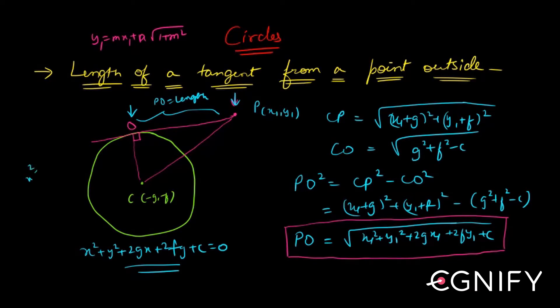Not x square plus y square equal to a square. The result that I will derive is anyways valid for this circle also, but just for generality I've taken x square plus y square plus 2gx plus 2fy plus c equal to 0. Now from this it should be clear what is the center.